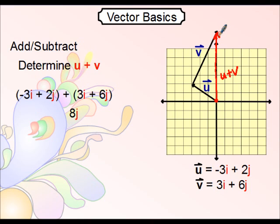So this particular vector itself is u plus v. And by the way, note where the arrowhead is. It's at 0,8, which means that this vector is just 8j.